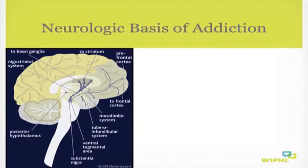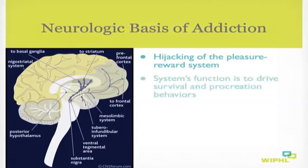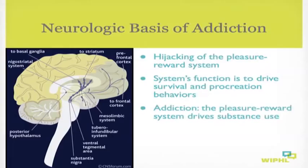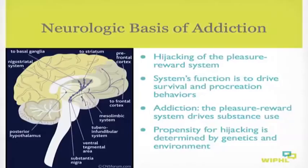We now know that addiction is truly a brain disease involving a hijacking of the pleasure reward system of the brain. Nature gave humans and all animals this system to drive survival and procreation — it's what makes us feel good after a nice meal or sex. With addiction, this system is hijacked so that rather than driving eating and sexual behaviors, it drives drinking and drug use. The number one risk factor for addiction is determined by genetics, but environmental factors are also at play.